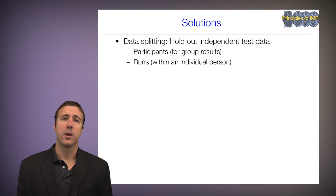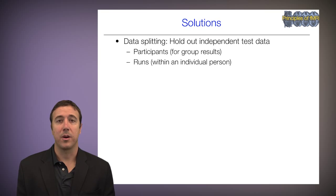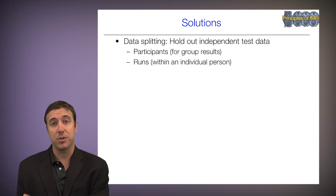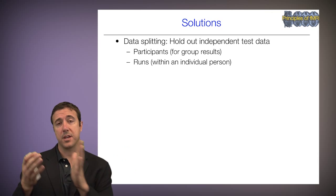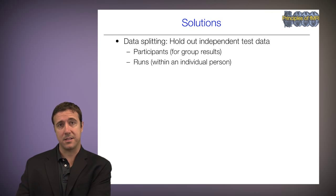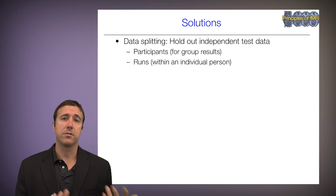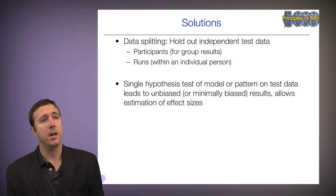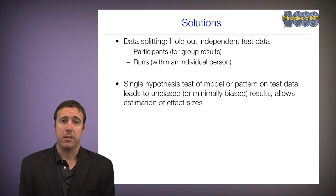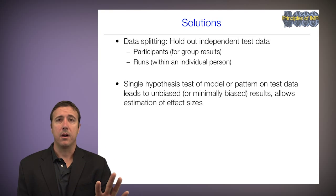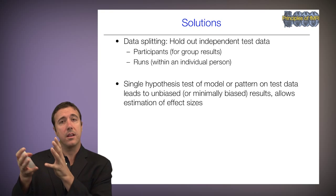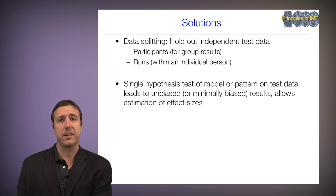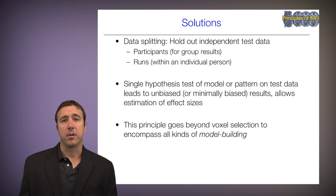Here are some solutions. One solution we'll advocate later in the course is data splitting — holding out independent test data if you actually want to estimate effect sizes. This means perhaps holding out a subsection of participants for a later exact test of reported findings, and also holding out runs if you're interested in making inferences within an individual. If you develop a model or pattern across regions integrated into a single test on new independent data, you can get an unbiased estimate of how large that effect is.